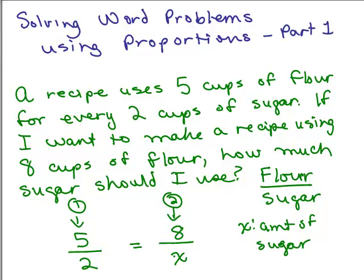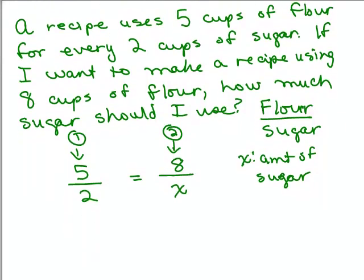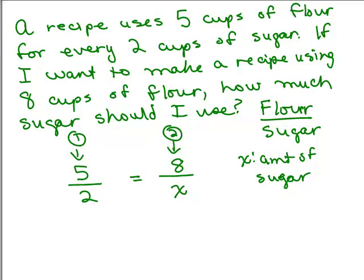We've set up a proportion, and now we can solve that proportion to figure out how much sugar to use. We could do the cross products, 5 times x equals the other cross product, which is 2 times 8, which is 16. We'll just divide both sides by 5.